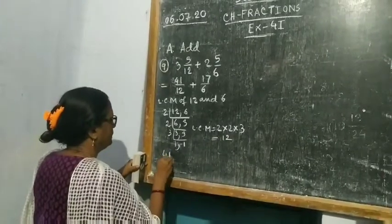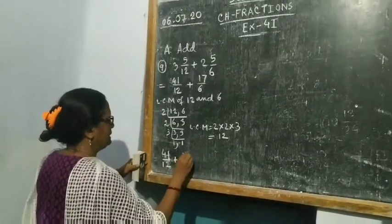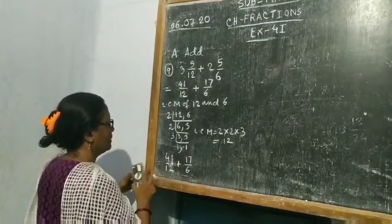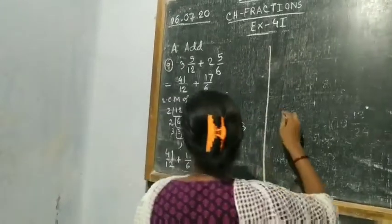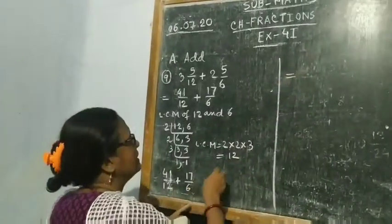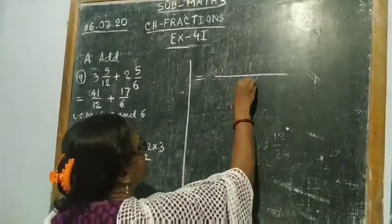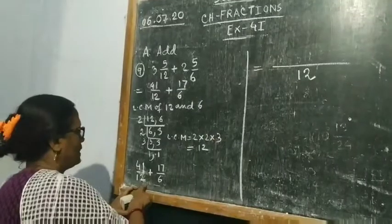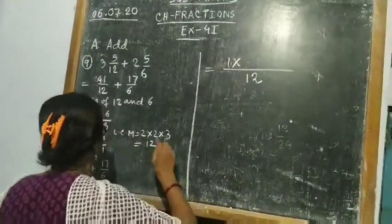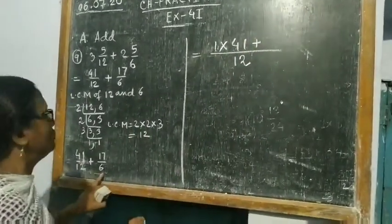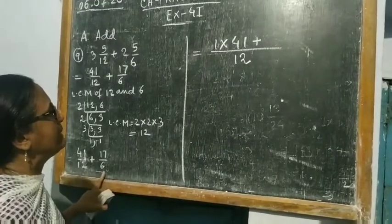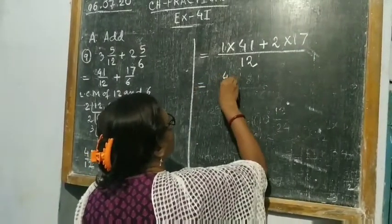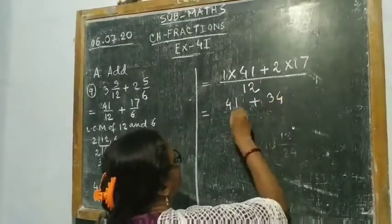Now children, you write 41 by 12 plus 17 by 6. The LCM of 12 and 6 is 12, so in the denominator you write 12. Now 12 divided by 12 is 1, so 1 into 41. Then divide 12 by 6: 12 divided by 6 is 2, so 2 into 17. So: 1 into 41 is 41, plus 2 into 17 is 34, giving 41 plus 34 by 12.